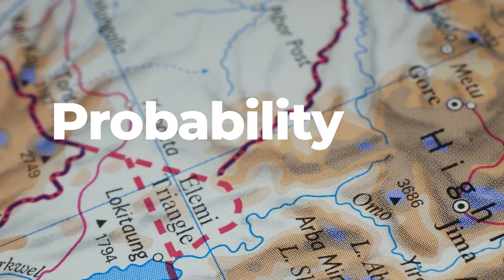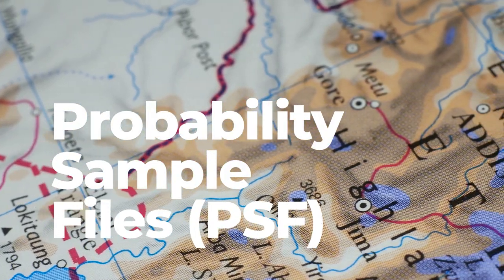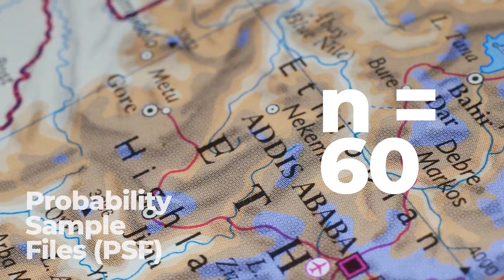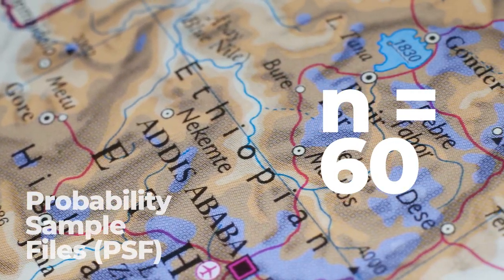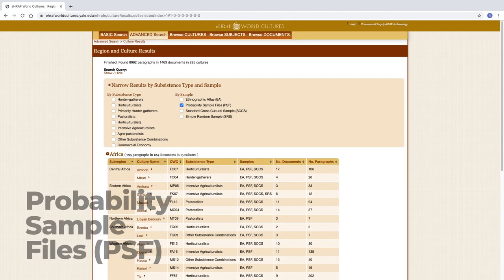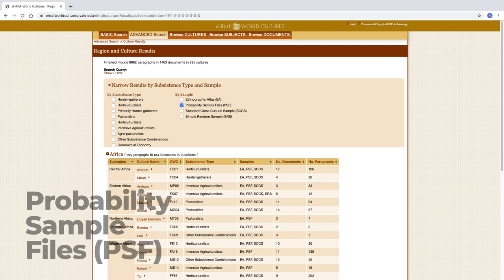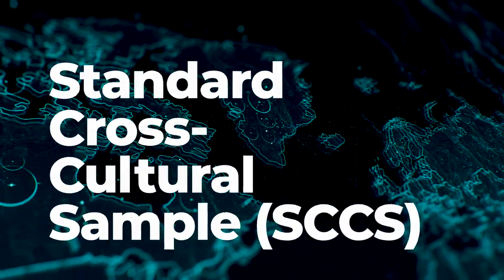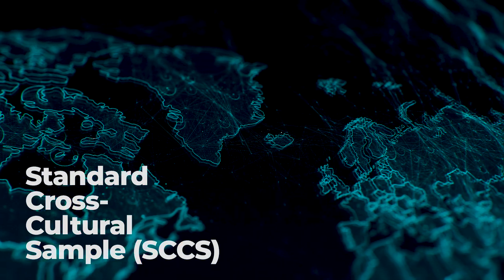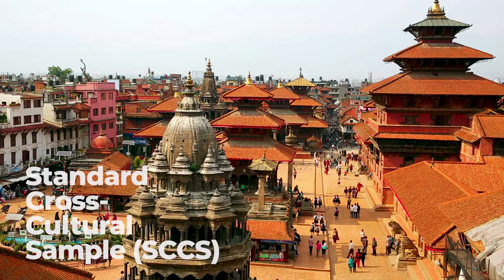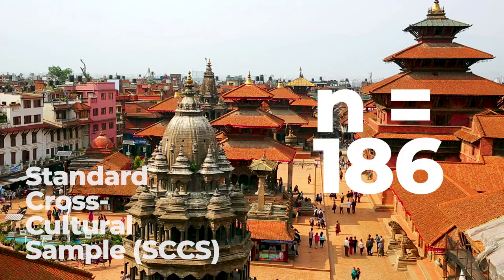Second on the list, the probability sample files is a stratified random sample of 60 cultures that was created by dividing the world into culture areas and randomly choosing one case from a list of societies that met certain data quality control criteria. Third on the list, Murdoch and White's 1969 standard cross-cultural sample divides the Ethnographic Atlas into culture areas and includes the best documented society from each. The SCCS contains 186 cultures.